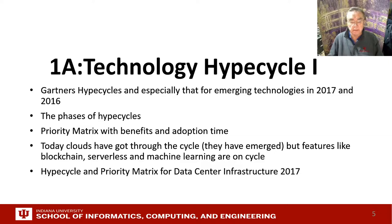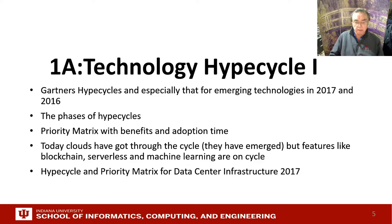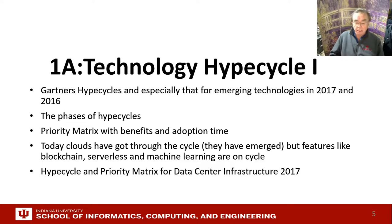This summarizes this small set of slides. We introduce the hype cycles with their phases. We go in particular to the emerging technologies, with the latest at 2017 and 2016 as a contrast. We look also at the more detailed priority matrices, which quantify benefits and adoption time. We also look at the related data center infrastructure hype cycle and priority matrix. Clouds have actually gone through the hype cycle — they emerged and no longer appear because they're not emerging technologies. But some features like serverless, machine learning, and blockchain are still on the cycle.